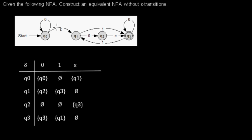Or with an epsilon I can go to Q1, so this transition. Or with a 1 I can go to nowhere, because there's no outgoing transition with a 1, so this is an empty set.